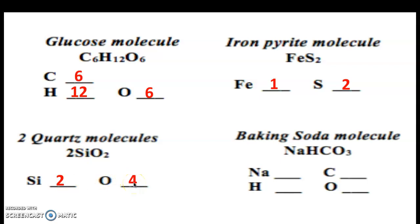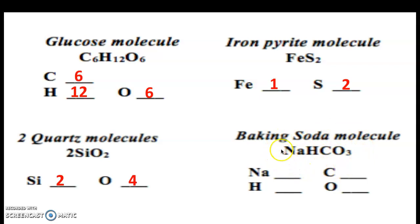Our last one is baking soda, NaHCO3. We have four elements present: sodium, hydrogen, carbon, and oxygen. The only subscript is the three, which goes only with the oxygen. There's no coefficient in front, so it's understood that there's just one molecule. So we have one sodium atom, one hydrogen atom, one carbon atom, and three oxygen atoms. Good job!